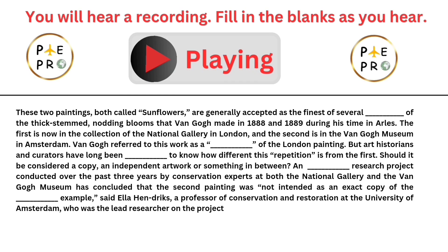Two paintings, both called Sunflowers, are generally accepted as the finest of several depictions of the thick-stemmed, nodding blooms that Van Gogh made in 1888 and 1889 during his time in Arles. The first is now in the collection of the National Gallery in London, and the second is in the Van Gogh Museum in Amsterdam.